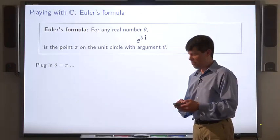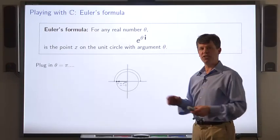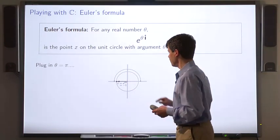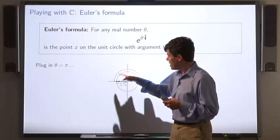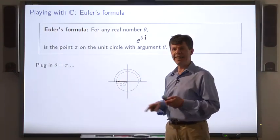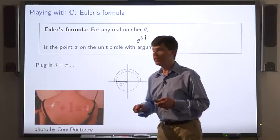If we plug in theta equals pi, that corresponds to an angle of 180 degrees. So, the complex number is this one, which turns out to be minus 1. So, e to the i times pi is minus 1.